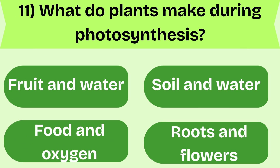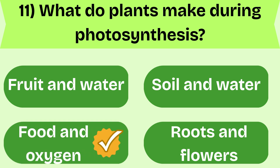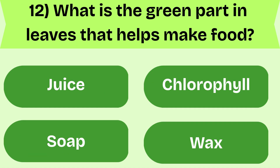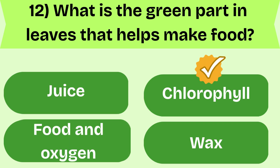What do plants make during photosynthesis? Food and oxygen. That's correct. Try the last one. What is the green part in leaves that helps make food? It's chlorophyll. You did a great job.